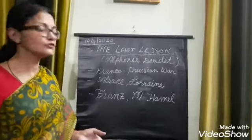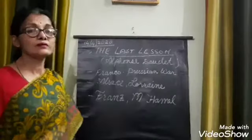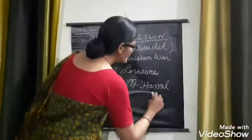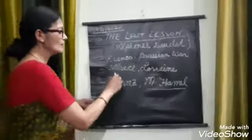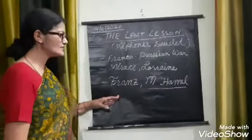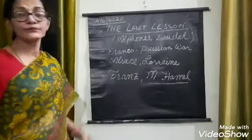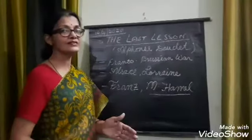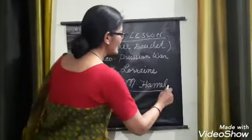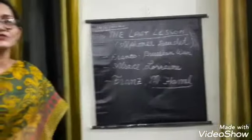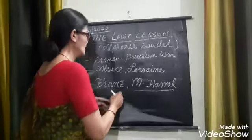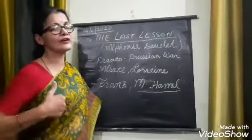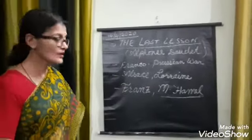Franz did not know even the basic ABC of participles, so he was very scared because M. Hamel was a very strict teacher. All the students used to be scared of him. Even Franz was very scared of M. Hamel, who used to carry a ruler in his arm and scold children. He was very disciplined.